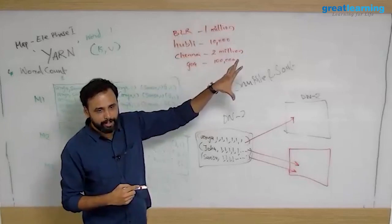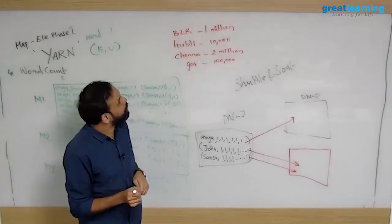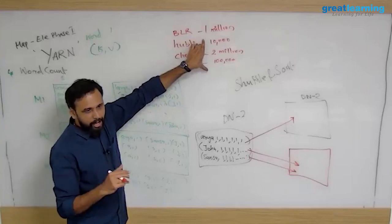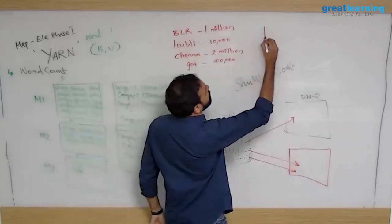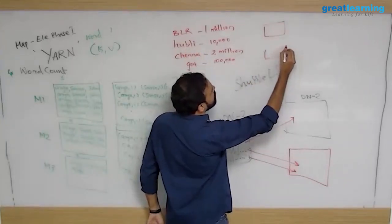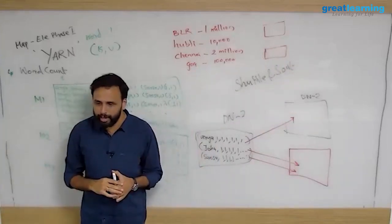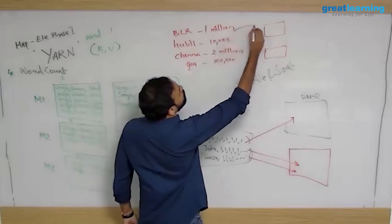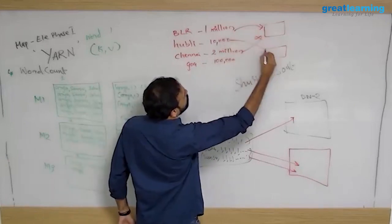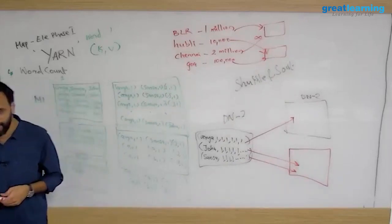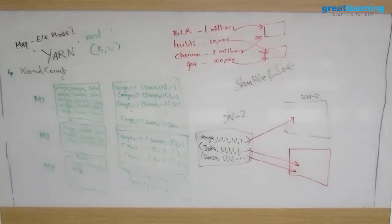Imagine you had only four branches, defined two reducers, and told the system to automatically distribute the key-value pairs. Chances are this branch goes here, that one goes here — you see the problem? By default in MapReduce it will try to evenly distribute the data, but there is no guarantee.